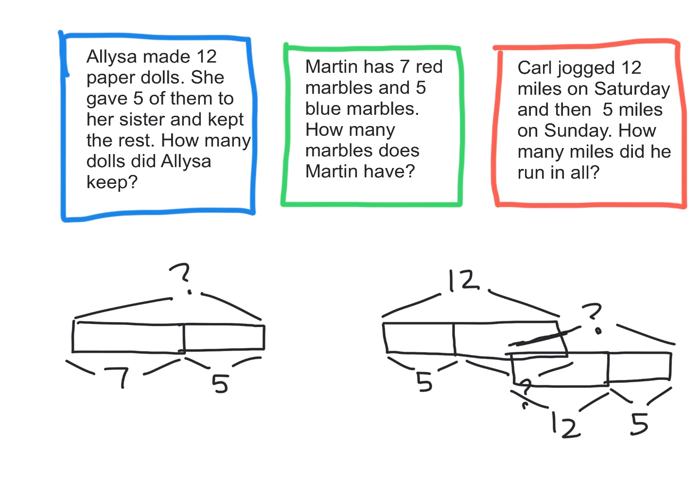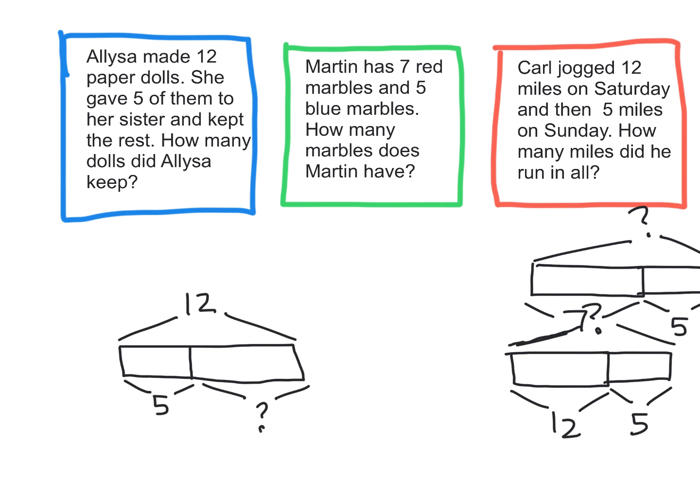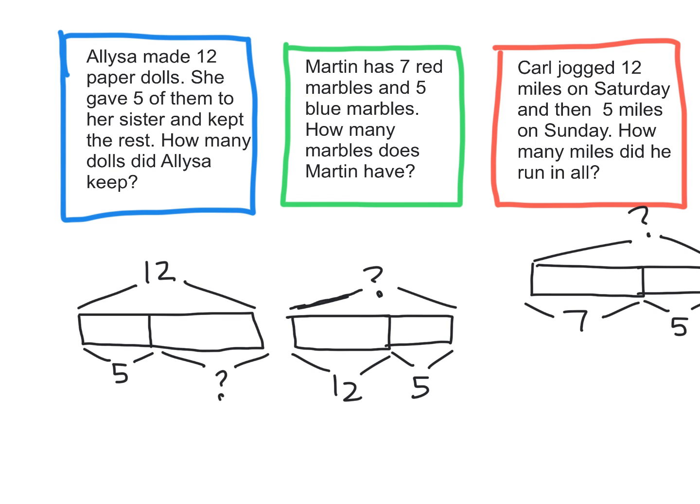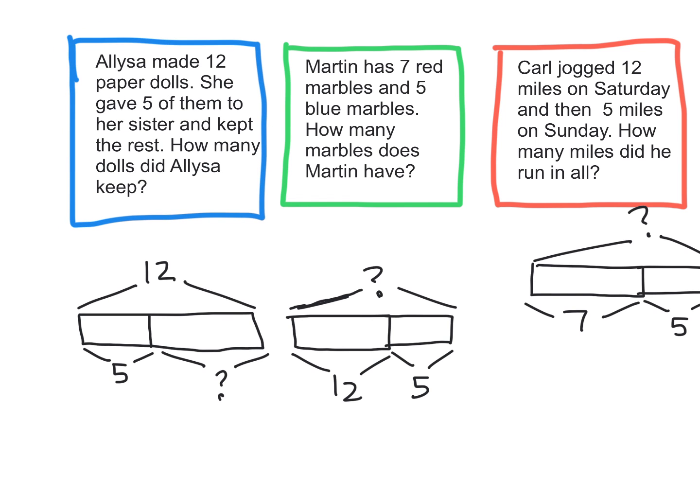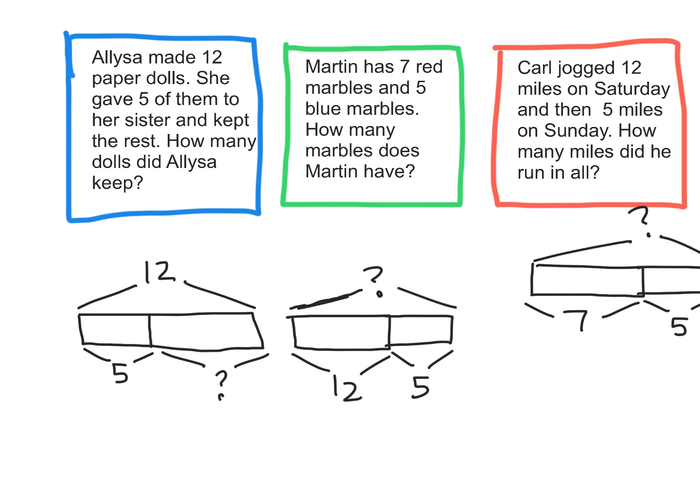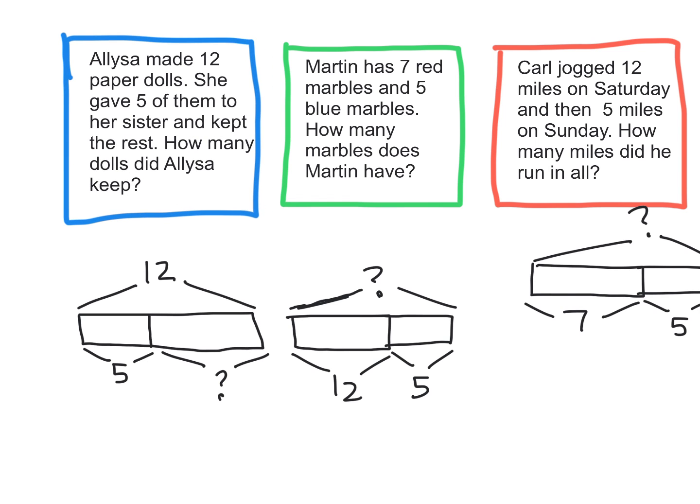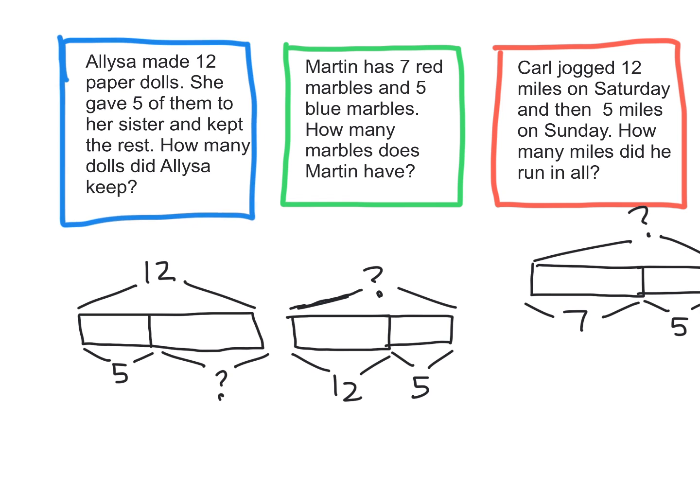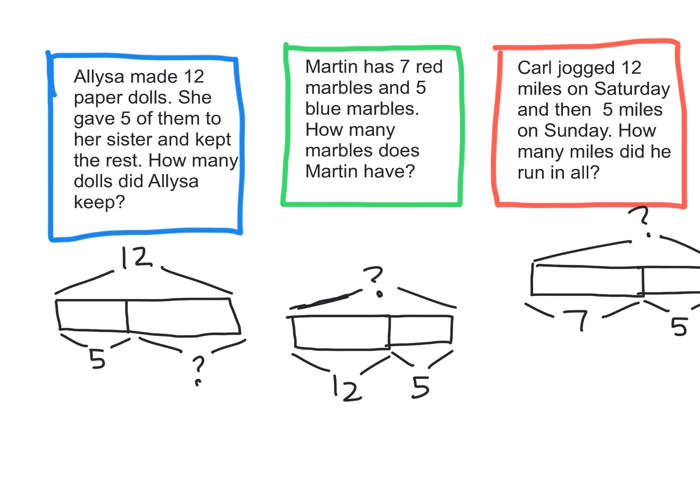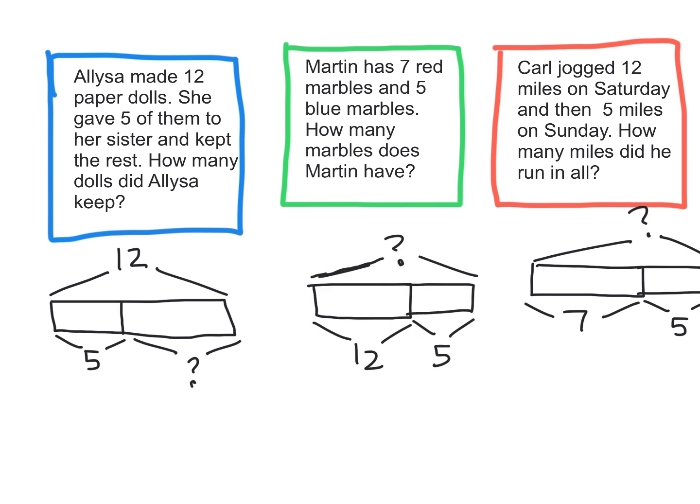So we might put this away, and we might look for, oh, here's two problems, two models that have the number 12. So let's think about this. It says, Alyssa made 12 paper dolls, and she gave five of them to her sister, and she kept the rest. Do we know how many she kept? No, not exactly. That means it goes with this model, right here. So this question goes with this model.